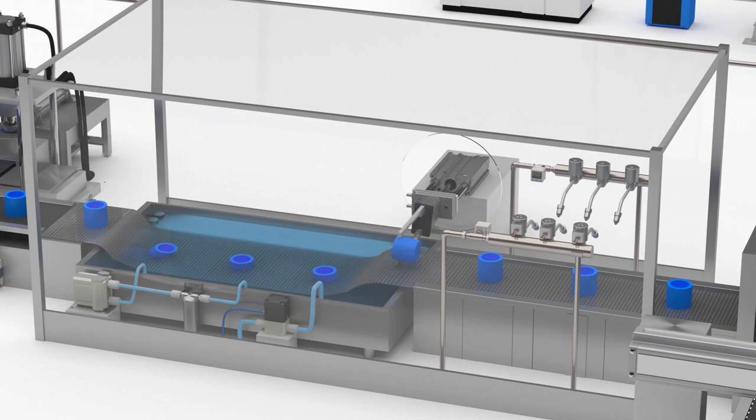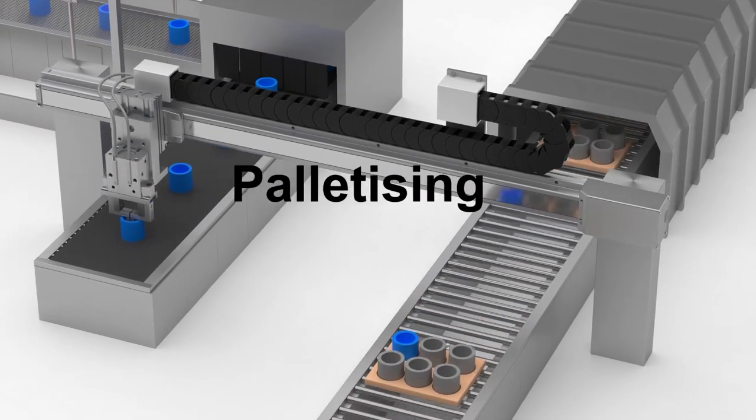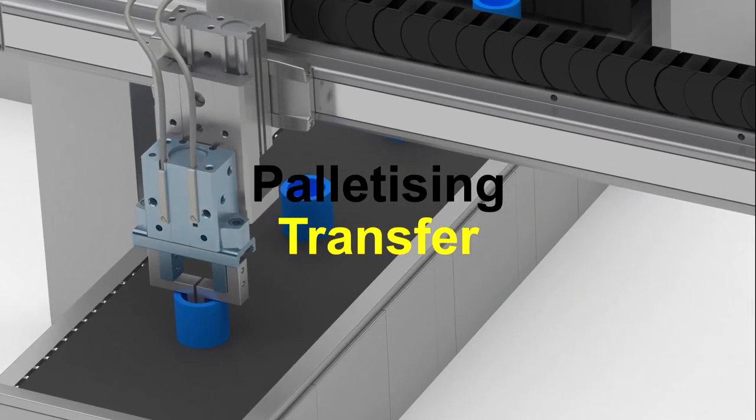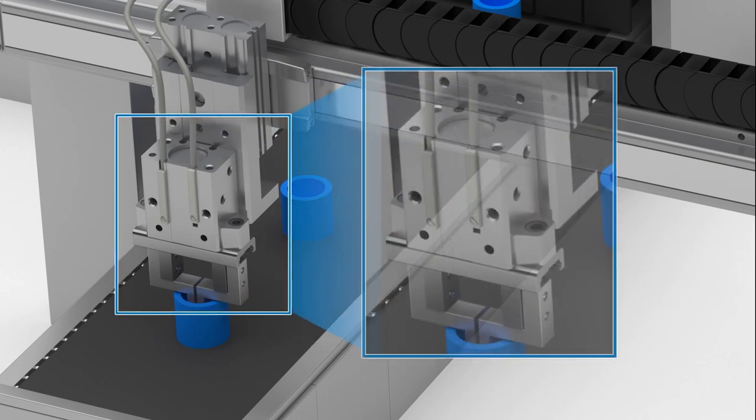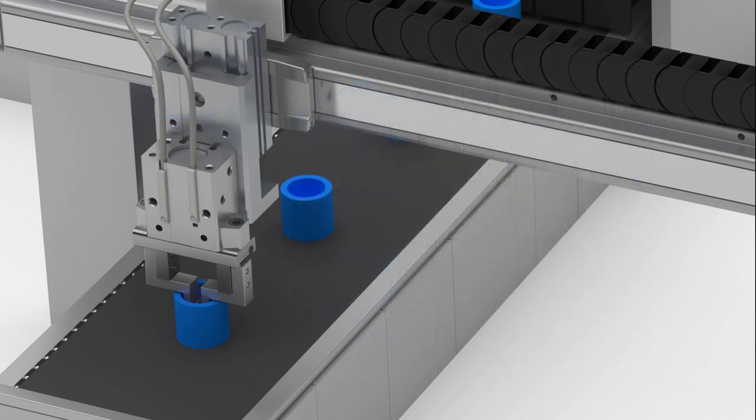This ends the production process. The workpieces are now transferred from the conveyor belt onto a pallet. An air gripper grips the workpieces when lifting them. Auto switches on the gripper body detect the position of the built-in magnet to determine when a workpiece has been gripped.